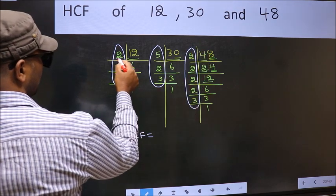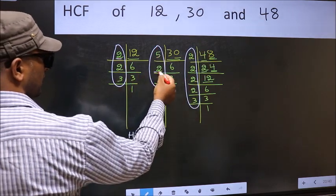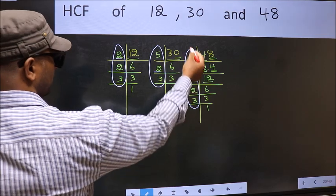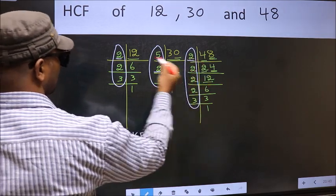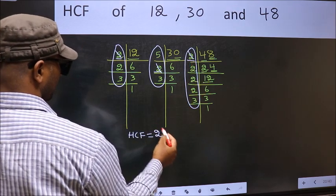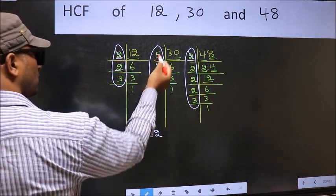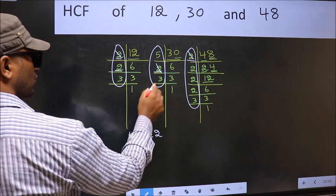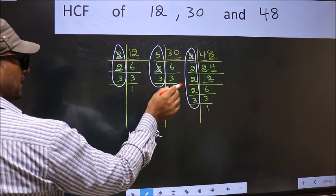Starting with the number 2. Do we have 2 here? Yes. Go to the next place. Do we have 2 here? Yes. So, cut 2 right here. Next number 2. Do we have 2 here? No. So, no need for us to check in the other place.